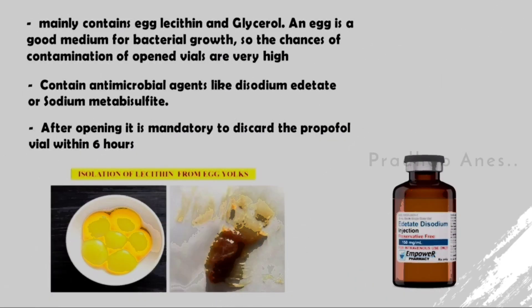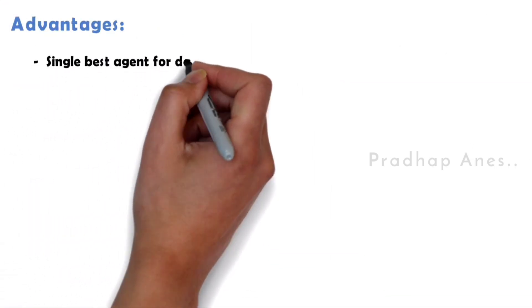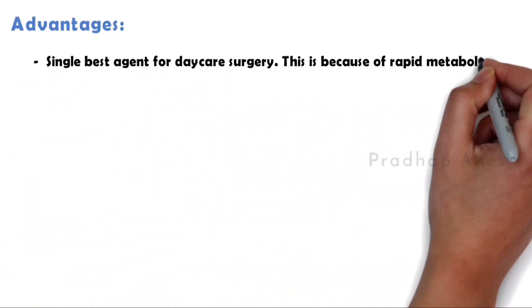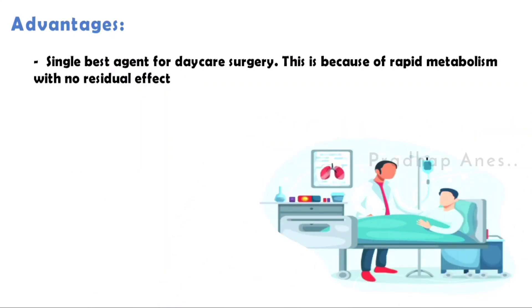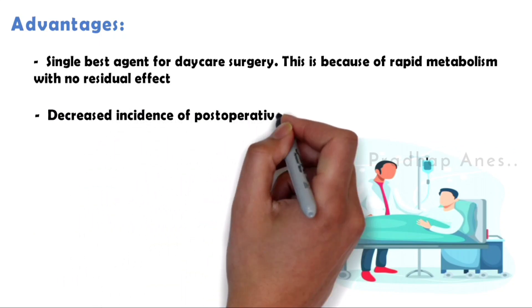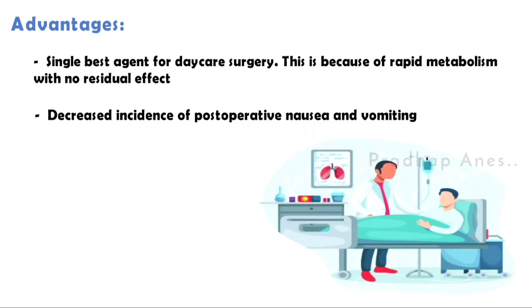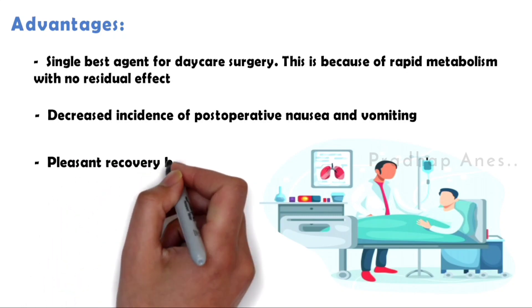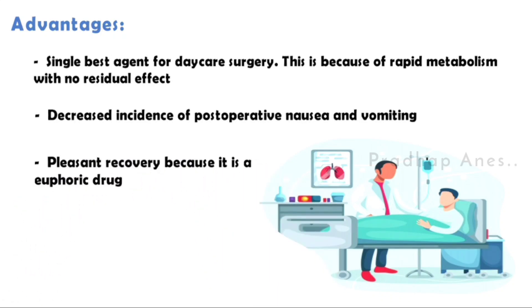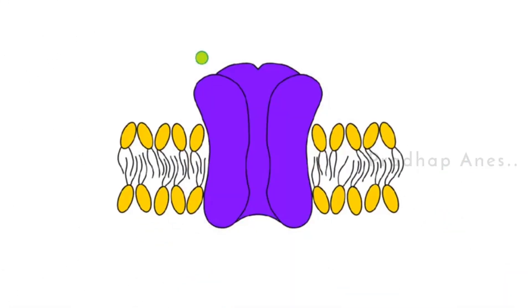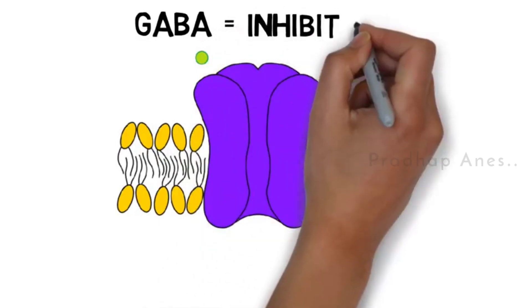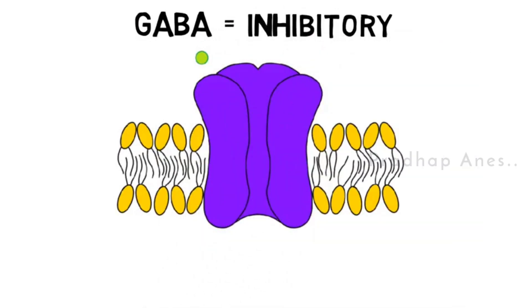Propofol is the single best agent for daycare surgery because of rapid metabolism with no residual effect. It has a decreased incidence of postoperative nausea and vomiting, and a pleasant recovery as it is a euphoric drug. Propofol involves positive modulation of the inhibitory neurotransmitter GABA through GABA-A receptors. It also inhibits glycine receptors.